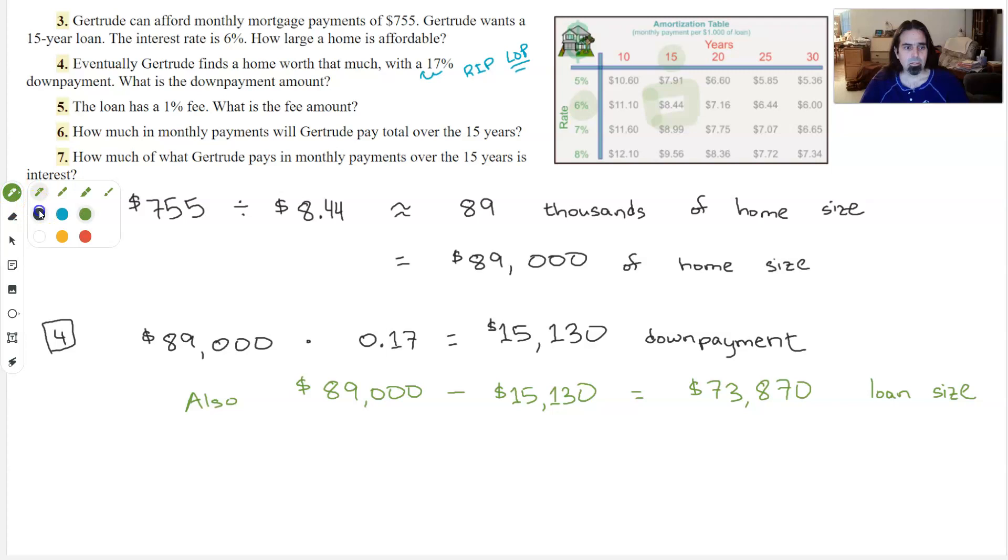So let's look at the numbers we have so far. Her home size is $89,000. The down payment is $15,000 of that, roughly.